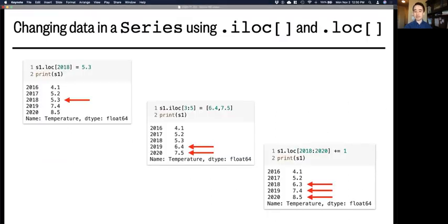We know indexing is useful to retrieve as well as assign values. So of course, we can use pandas indexing with dot iloc and dot loc to change the data in a series object, not just retrieve it. For instance, s1 dot loc brackets 2018 equals 5.3 changes the value for 2018 to 5.3. And in this second example, dot iloc brackets 3 to 5 changes the third and the fourth element, because it's exclusive at the end, to these new values.